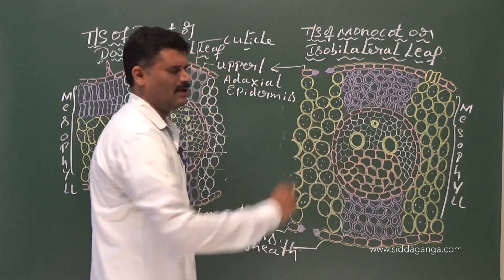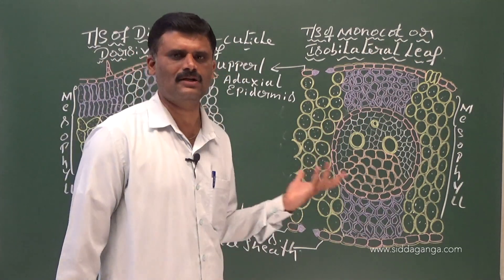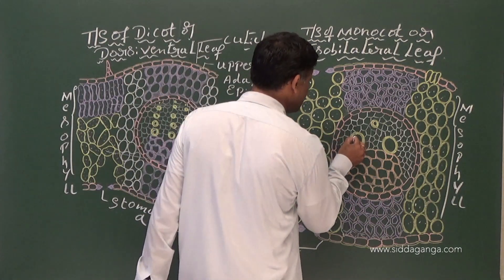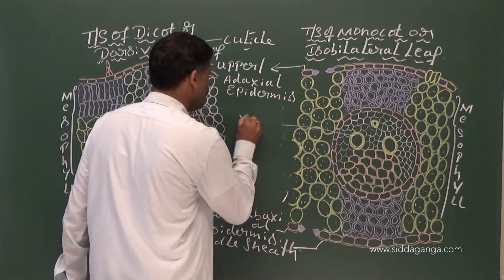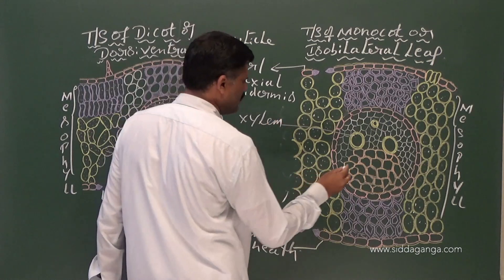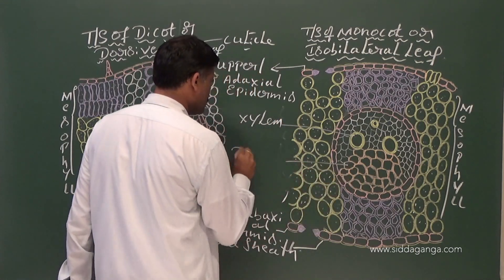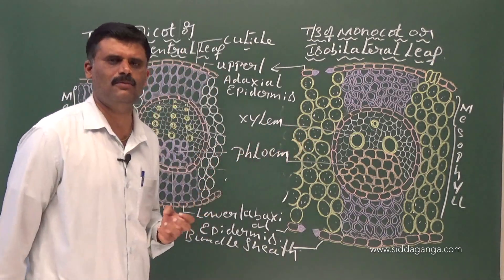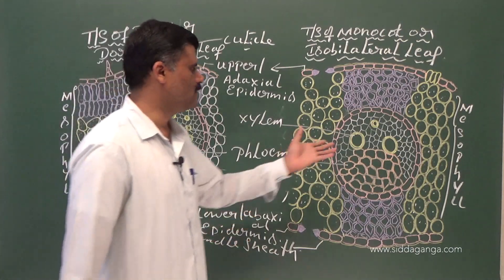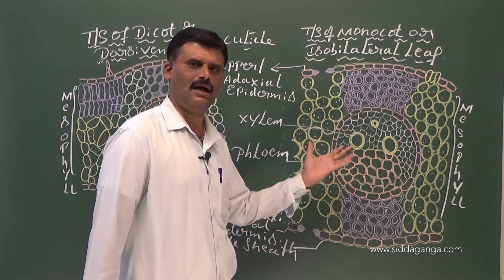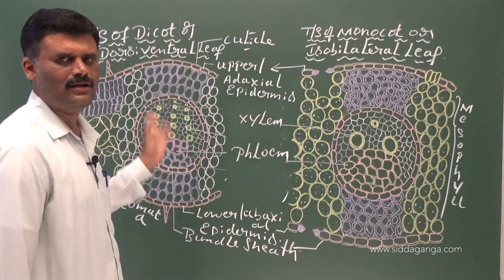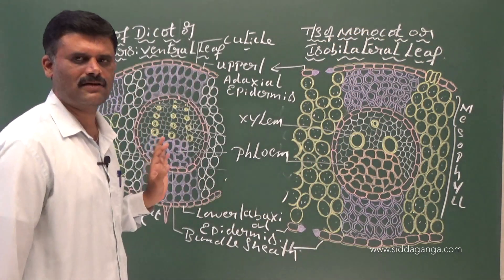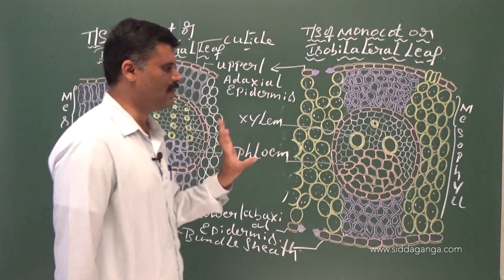The vascular bundles are located in the vein regions. Xylem is present towards the upper epidermis; phloem is towards the lower epidermis. In both dicot leaf and monocot leaf, the vascular bundle is conjoint, collateral, and closed. Xylem is towards the upper surface in both cases; phloem is towards the lower surface.